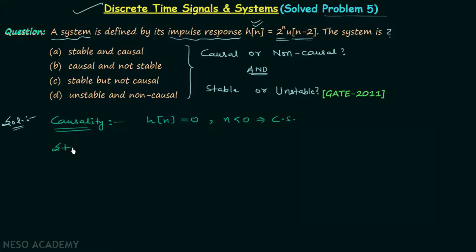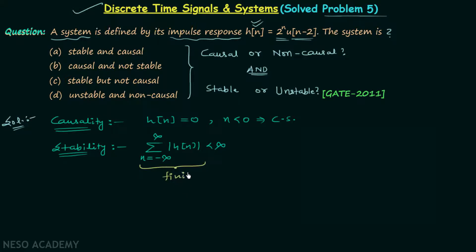Now let's move on to the condition of stability. A discrete time system is said to be stable if the summation from n equal to minus infinity to infinity of |h[n]| is less than infinity. This means when you calculate that summation, you should get some finite value. Whenever this condition is satisfied, the discrete time system is a stable system.